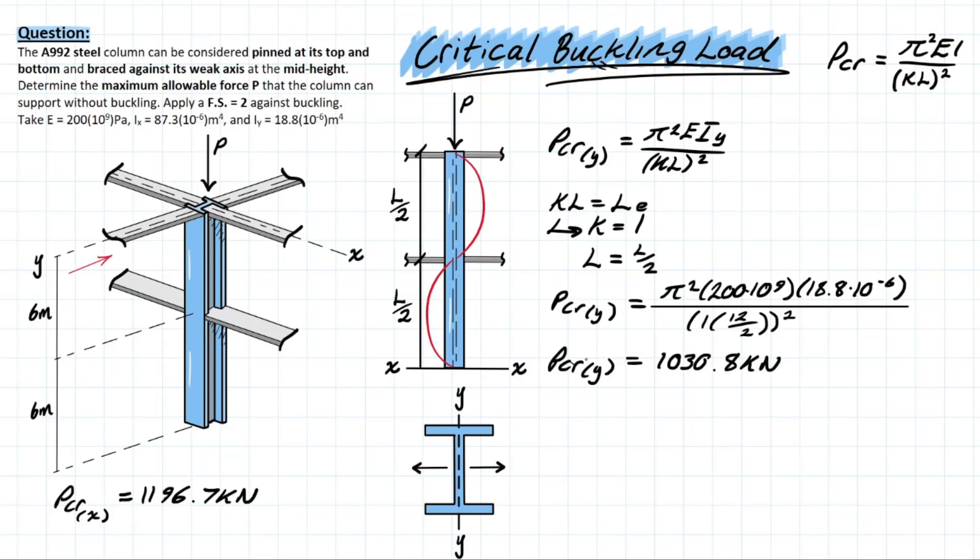This is where we have to do some comparison. What is critical in this case? The critical load is going to be the lowest value we can get from this formula. Comparing this to the critical buckling load about the x-axis, we can see that this is much lower, therefore this is going to govern the failure of the column. It would fail in this buckling mode before it would fail about the strong axis.